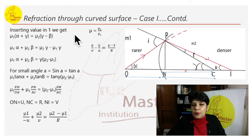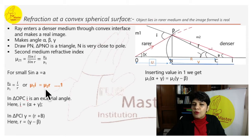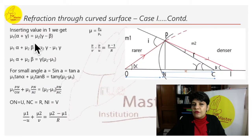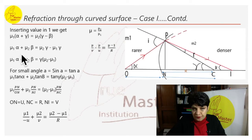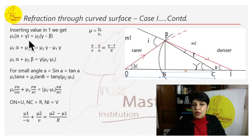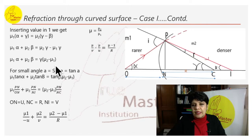Inserting these values into mu_1 · i = mu_2 · r: in place of i we write (alpha + gamma) and in place of r we write (gamma − beta). Expanding: mu_1 · alpha + mu_1 · gamma = mu_2 · gamma − mu_2 · beta. Bringing gamma terms to one side: mu_1 · alpha + mu_2 · beta = gamma · (mu_2 − mu_1).